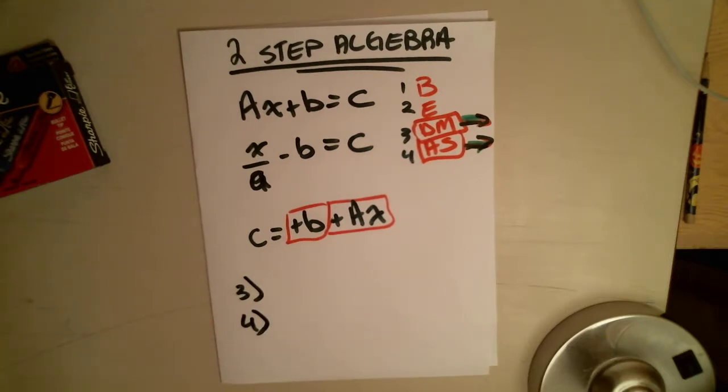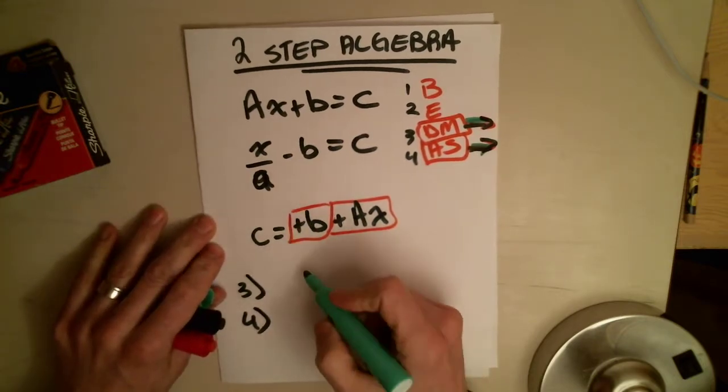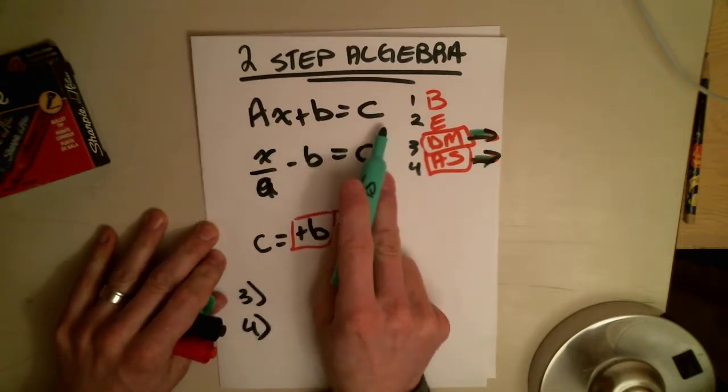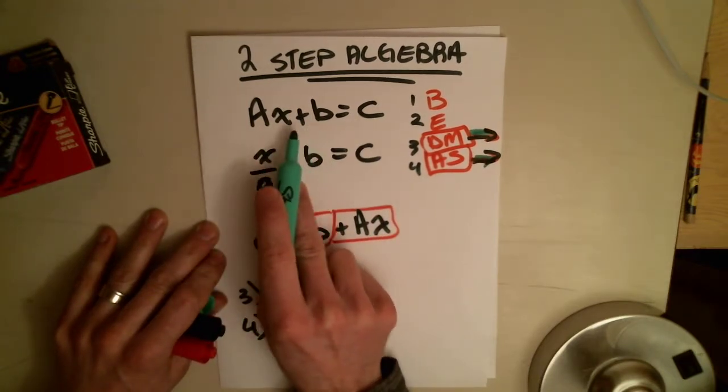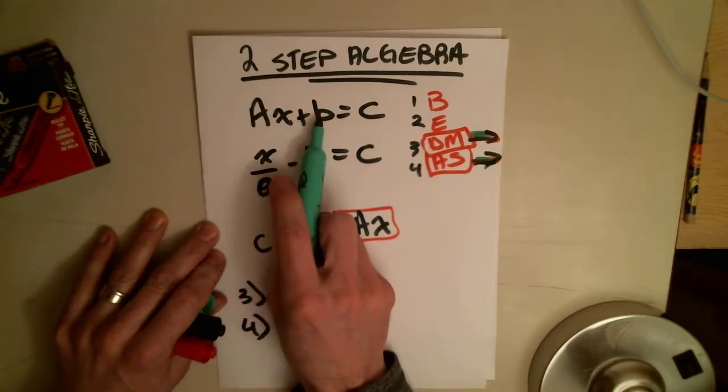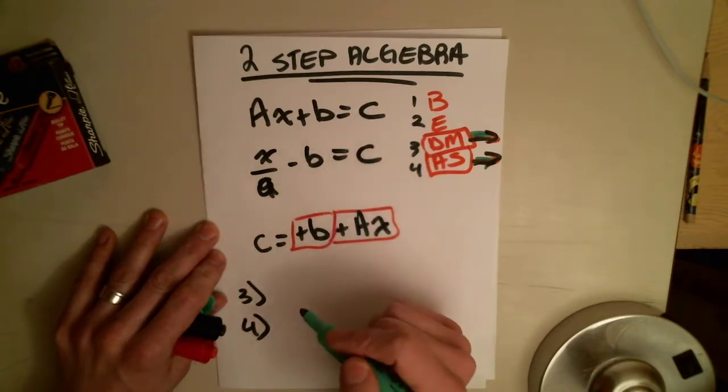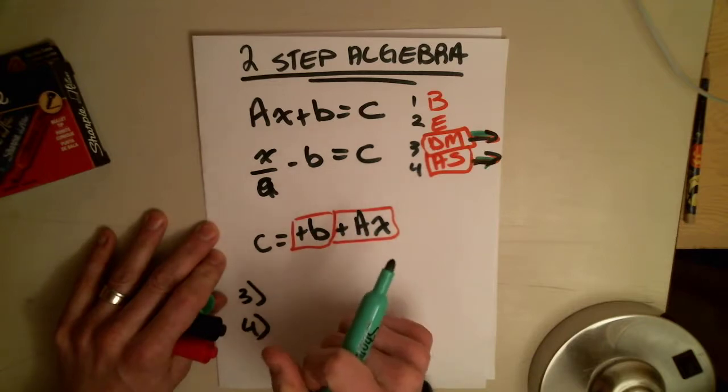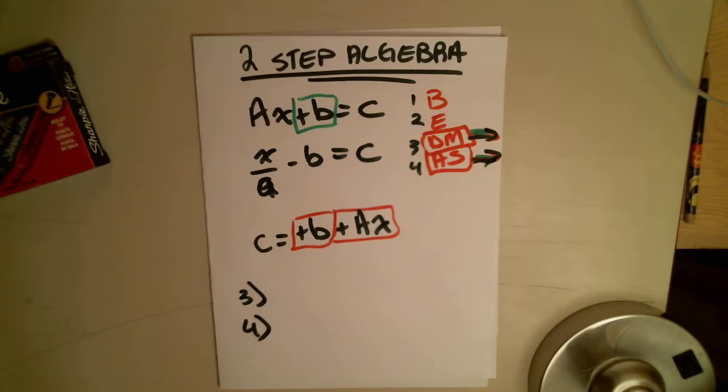We always want to get rid of the constant first. The reason being is that if I have ax plus b equals c, and I start dividing by a, well, if I divide this by a, that means I have to divide this whole term by a. So then I'm going to get ax plus b divided by a equals c divided by a. So what that does is it muddies up the equation. It actually makes it more complicated. Okay, so remember constant is a number that doesn't have a variable.